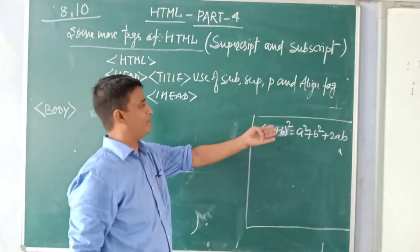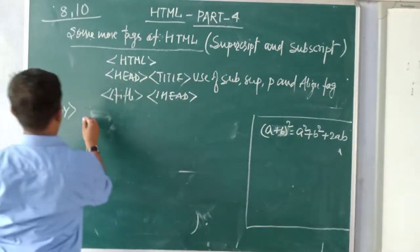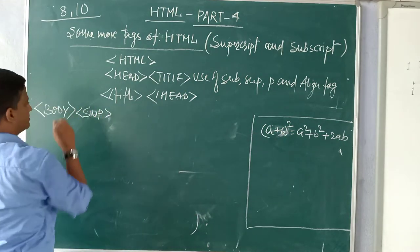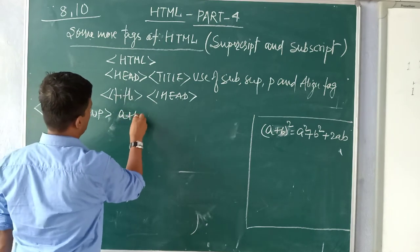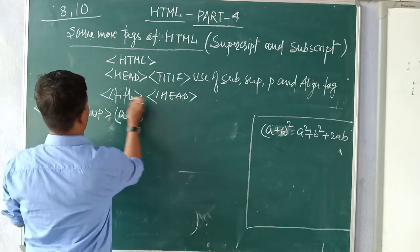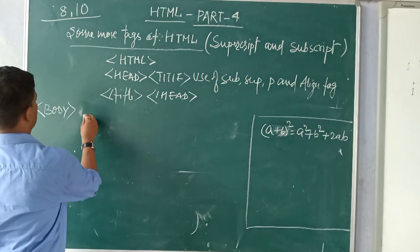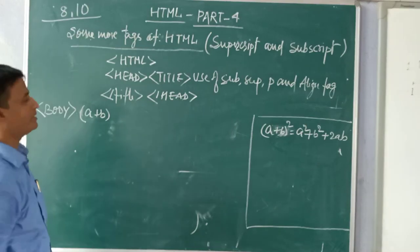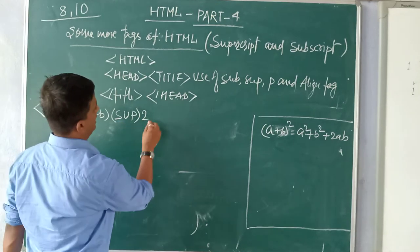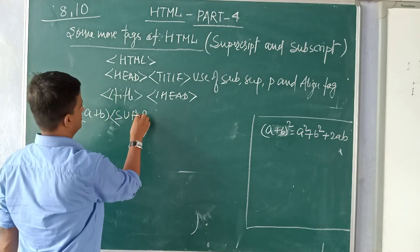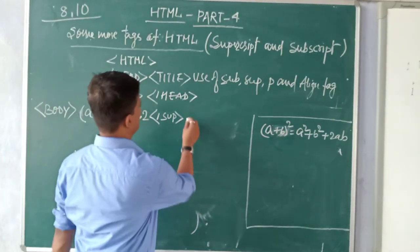When we display, we want a plus b whole square. First you will write simply a plus b. This is superscript so you will write SUP and then what you will do, you will write a plus. Then a plus b you will write, then you will write super 2. Power is 2 you will type 2 and you will close this super.